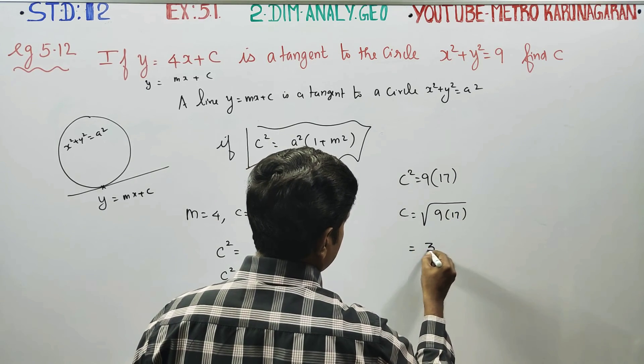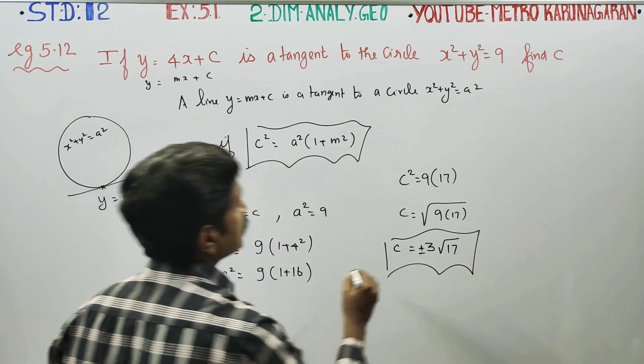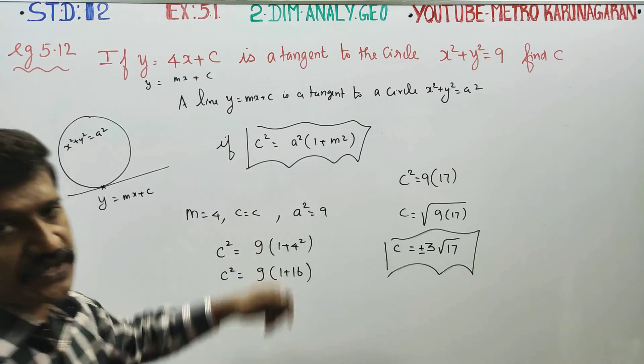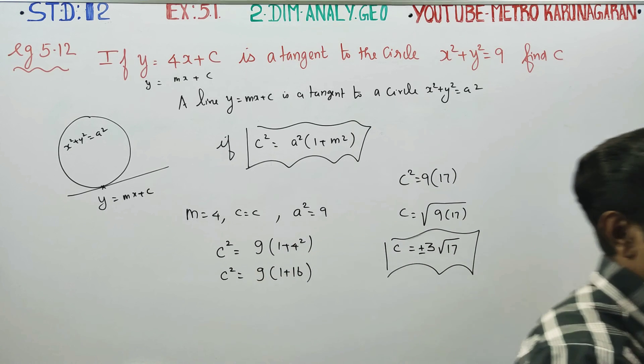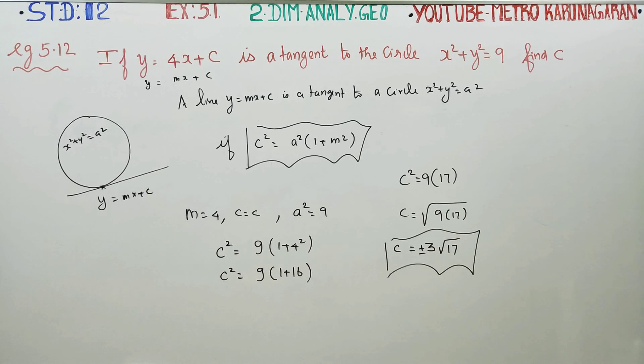Square root of 9 is 3, so it's 3 root 17 plus or minus. This is my value of c. You have to use this condition: c square is equal to a square into 1 plus m square for a line to be a tangent to the circle. Thank you.